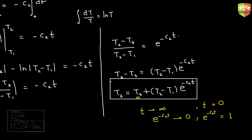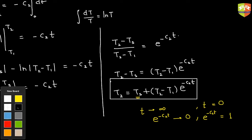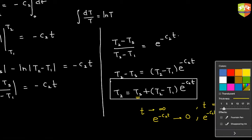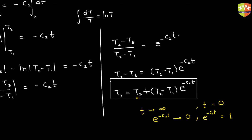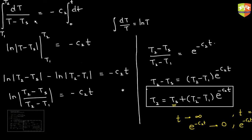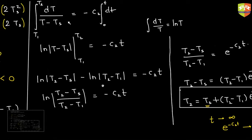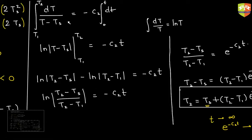A student points out a correction: it should be ln(T2 - TS) and ln(T1 - TS). The teacher confirms: yes, this is T2 - TS divided by T1 - TS. Good catch.